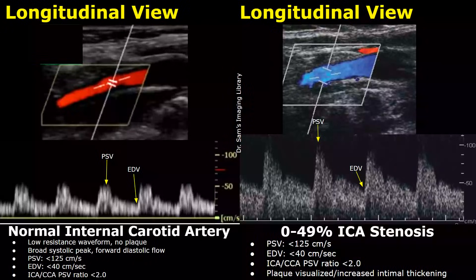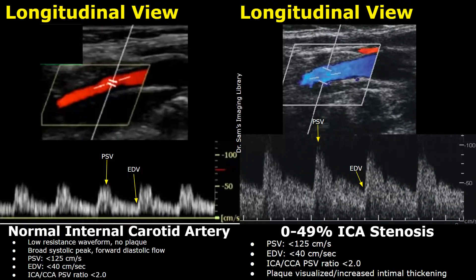Now we will look at Doppler analysis of the internal carotid artery. This is the normal color flow within the internal carotid artery, and here is the spectral waveform. It is a low resistance waveform with a broad systolic peak and forward diastolic flow. The peak systolic velocity (PSV) in normal cases is less than 125 cm per second, the end diastolic velocity (EDV) is less than 40 cm per second, and the ICA to CCA PSV ratio must be less than 2.